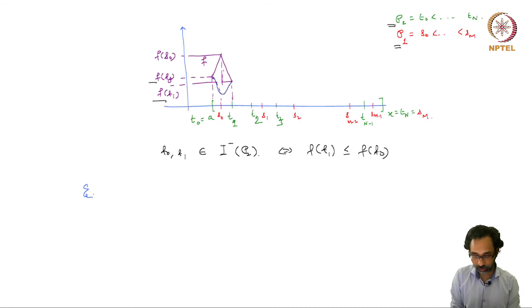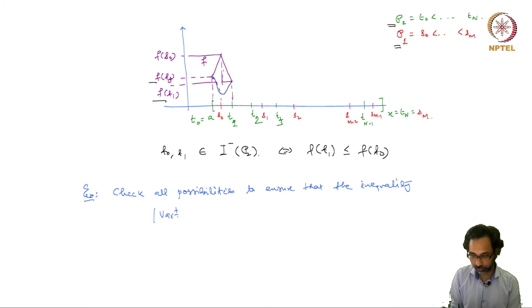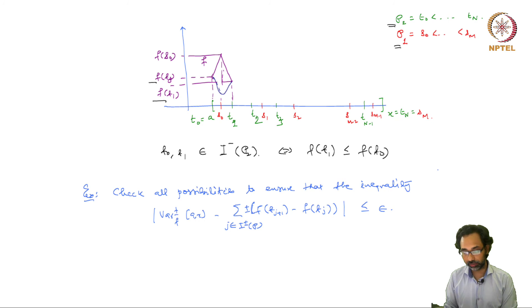I will leave it as an exercise to check all possibilities to ensure that the inequality |var⁺/⁻(f,[a,x]) − the sum over j in I⁺/⁻(p) of ±(f(t_{j+1}) − f(t_j))| is less than or equal to ε. So even though we can have changes in the index set, we will still have this inequality.